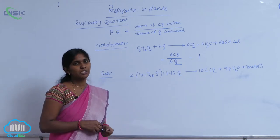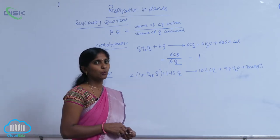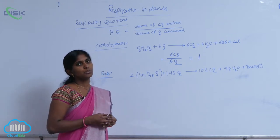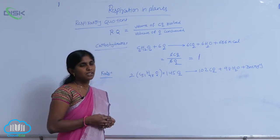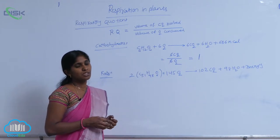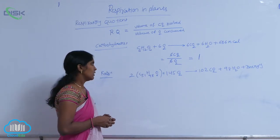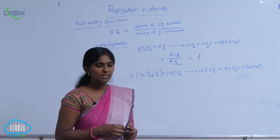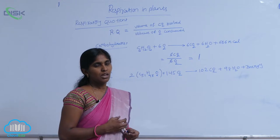For carbohydrates, the respiratory quotient is equivalent to 1. In case of fats, when the fats are used as respiratory substances in respiration, the respiratory quotient is less than 1. How means?